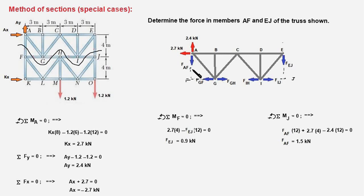So we write first the moment of all the forces about point F. We get this equation: 2.7 kilonewton force will have a counterclockwise moment and force EJ will have clockwise moment, and we'll have this equation which will yield F EJ as 0.9 kilonewtons. So this force is 0.9 kilonewtons.